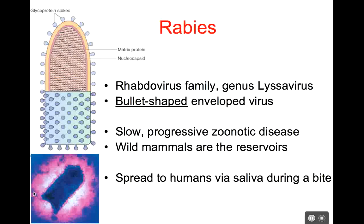Rabies is part of the rhabdovirus family. One interesting thing about rabies is its shape — it has a very distinctive bullet-like shape. When you see a picture of the rabies virus, you know that's what it is because of that bullet shape. That always helps me remember it because there was a movie called Old Yeller that was about rabies, and it ended with a bullet.